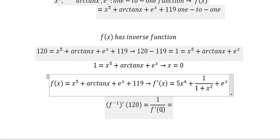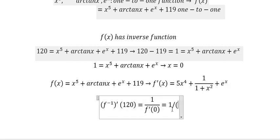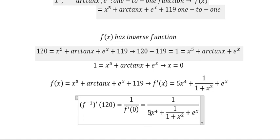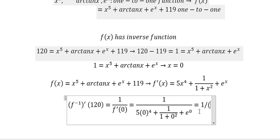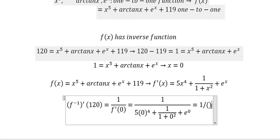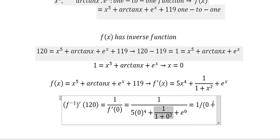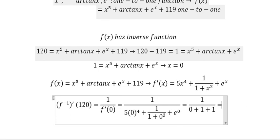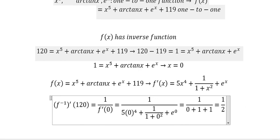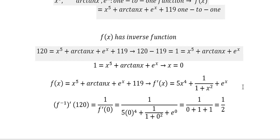Now we substitute x equal to 0 here, here, and here. We get: this term gives 0, this term gives 1, this term gives 1, and the final answer is 1 over 2. This is the end — thank you for watching!